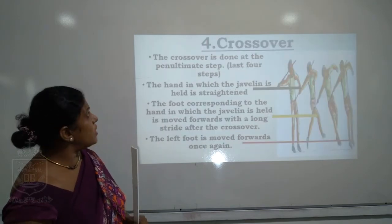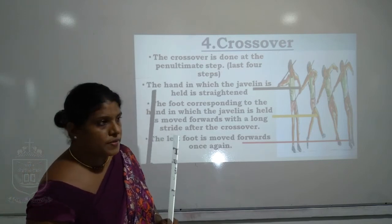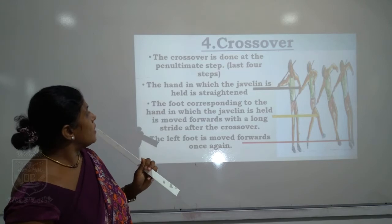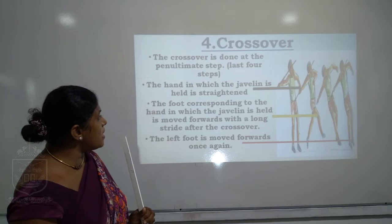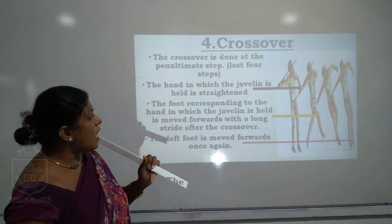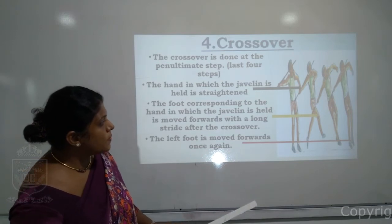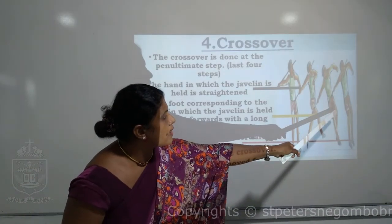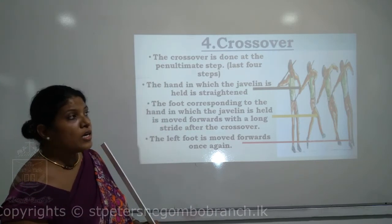Fourth: crossover. The crossover is done at the penultimate steps — the last four steps. The hand holding the javelin is straightened. The foot corresponding to the hand holding the javelin is moved forward with a long stride after the crossover. The left foot is then moved forward once again.